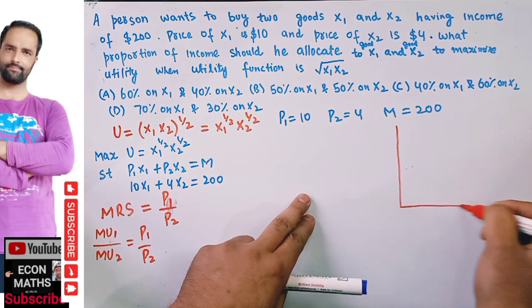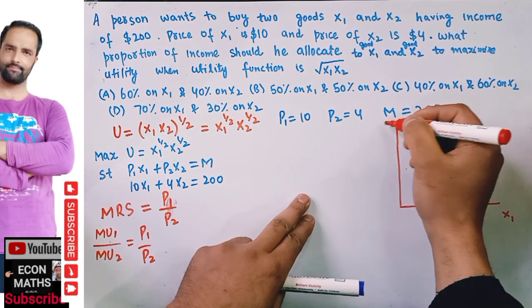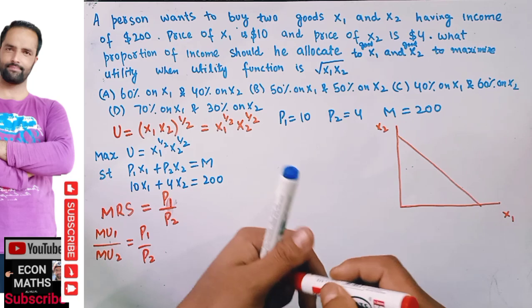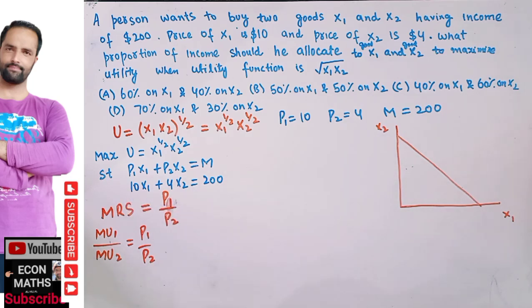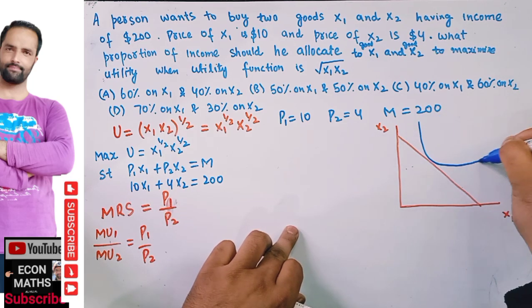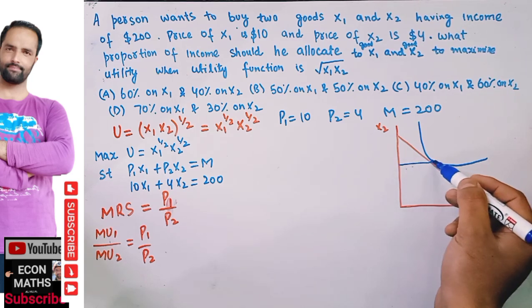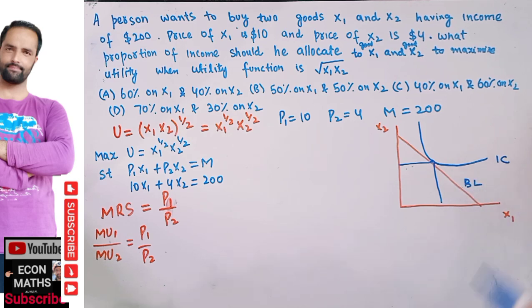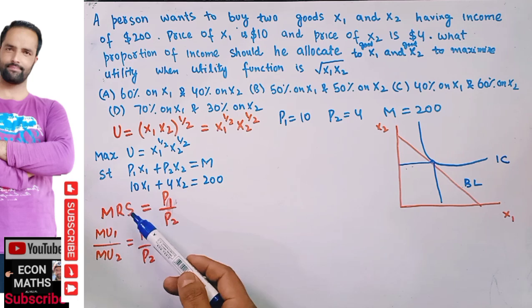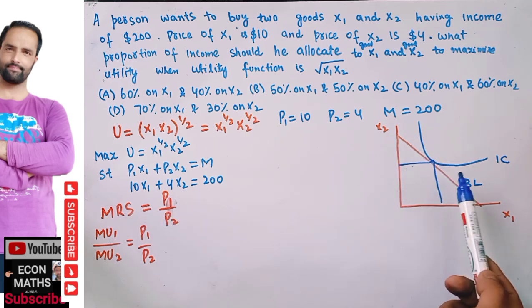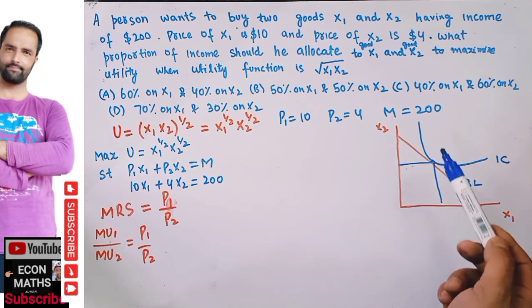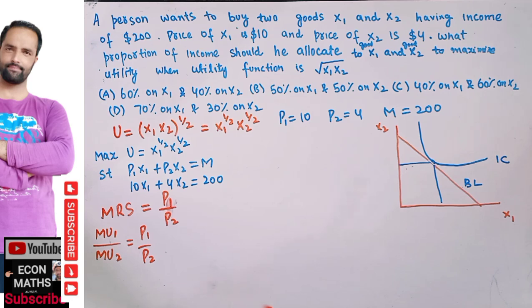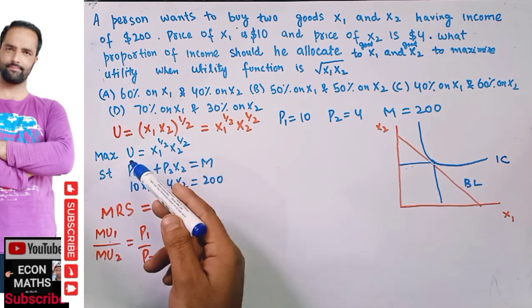Graphically, if X1 is on the horizontal axis and X2 on the vertical axis, the optimal point is found where the indifference curve is tangent to the budget line. This means the slope of the indifference curve equals the slope of the budget line.